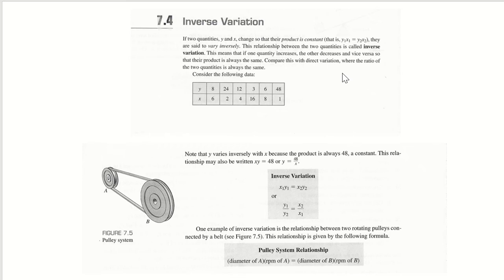Compare this with direct variation where the ratio of two quantities is always the same. Consider the following data and note that y varies inversely of x because the product is always 48, a constant.